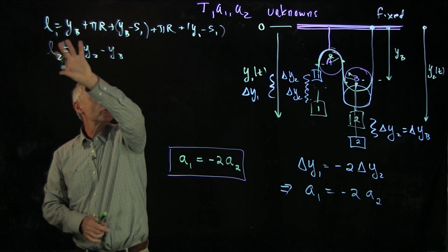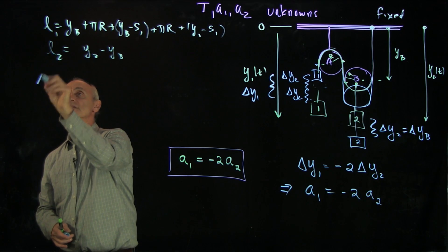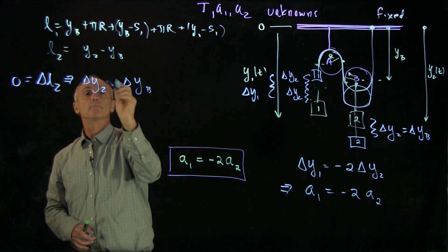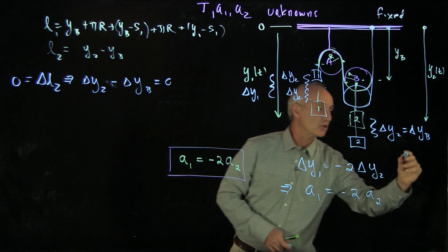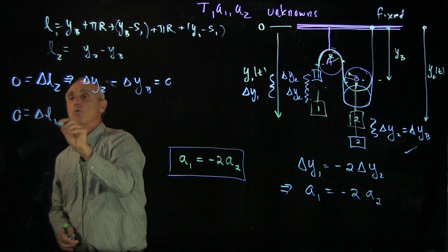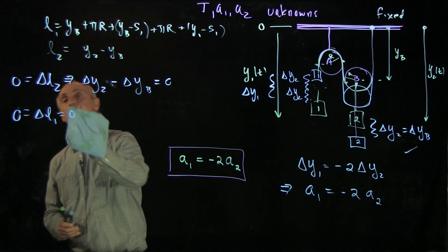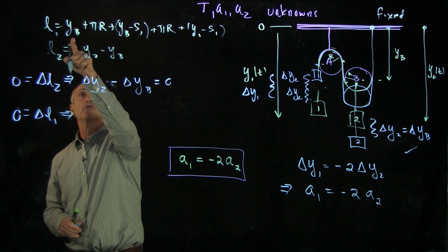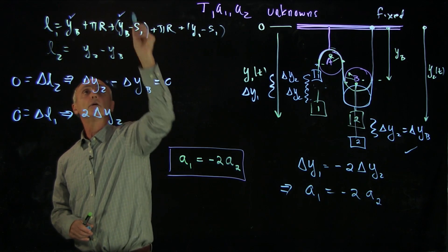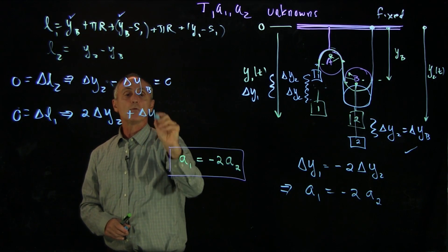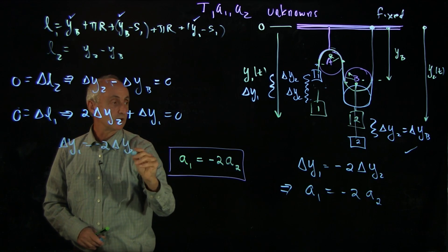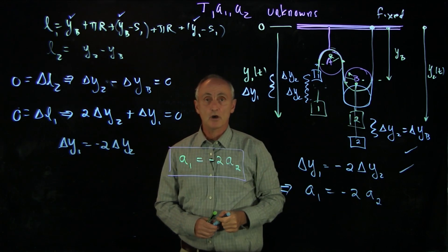But let's come back to our two conditions for length and see the same thing here. Because delta y2 minus delta yb equals 0, this tells us that delta y2 is equal to delta yb — that was our condition that the block and object 2 are moving together. And up here, we see that because delta l1 is also 0, making the substitution that delta yb equals delta y2, we get 2 delta y2 plus delta y1 equals 0. And so delta y1 is minus 2 delta y2, which is what our virtual displacement argument showed us.